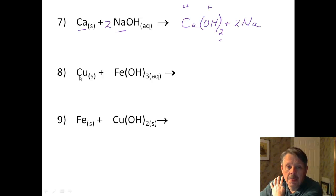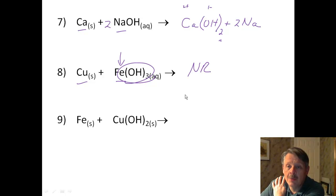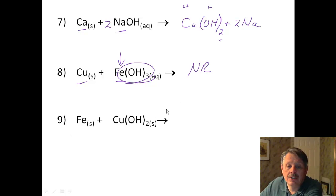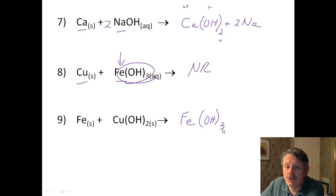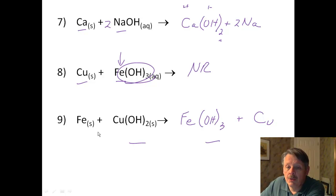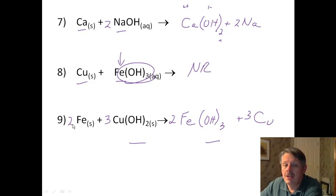Number 8: copper and iron. Iron is higher on the activity series, so it's already bonded with the OH — no reaction happens. Number 9 must happen instead. Since iron is higher on the activity series, iron is going to be with the OH. Iron has a 3+ charge, so it's Fe(OH)₃ plus copper. I've got 3 OHs on the right and only 2 on the left, so I need 6 total. I put a 3 in front of copper and a 2 in front of iron, and I am now balanced.